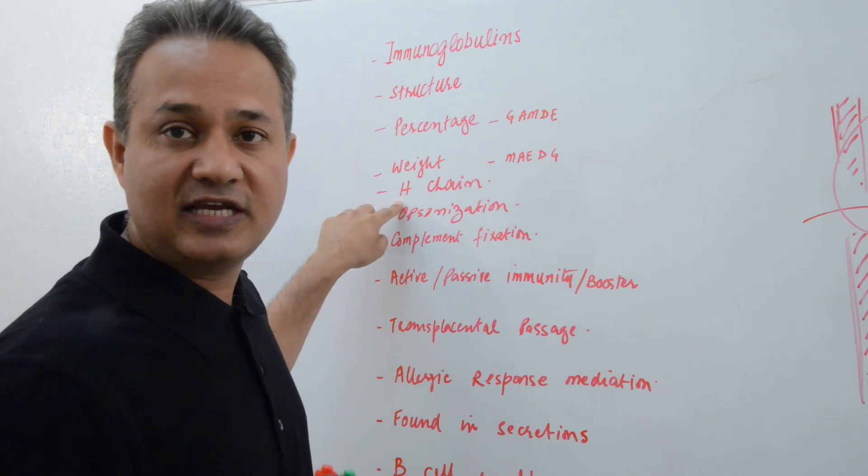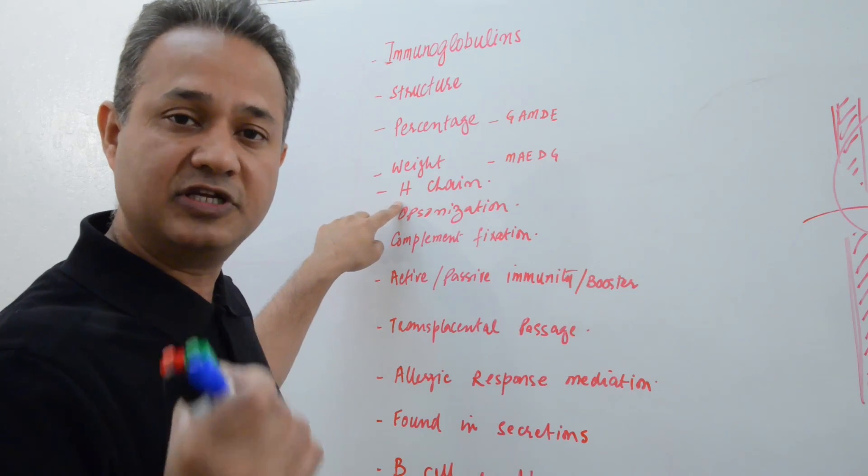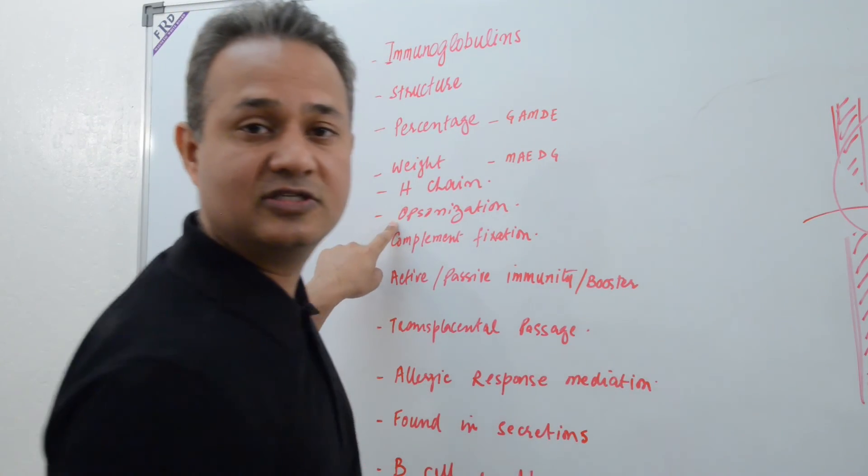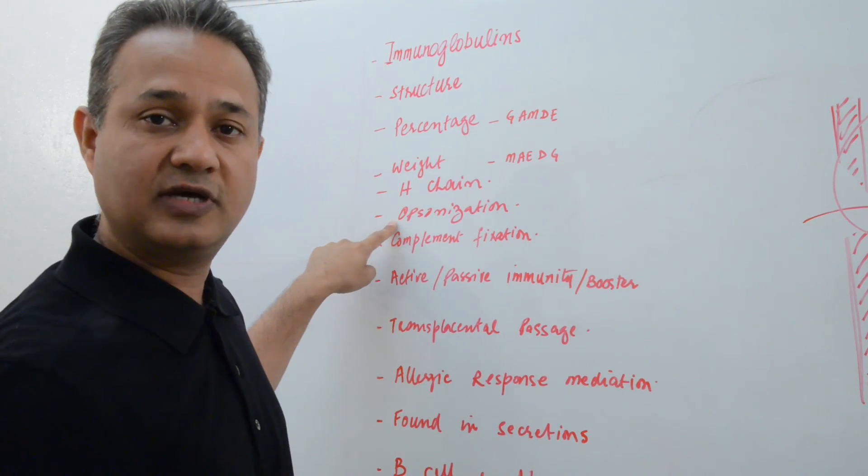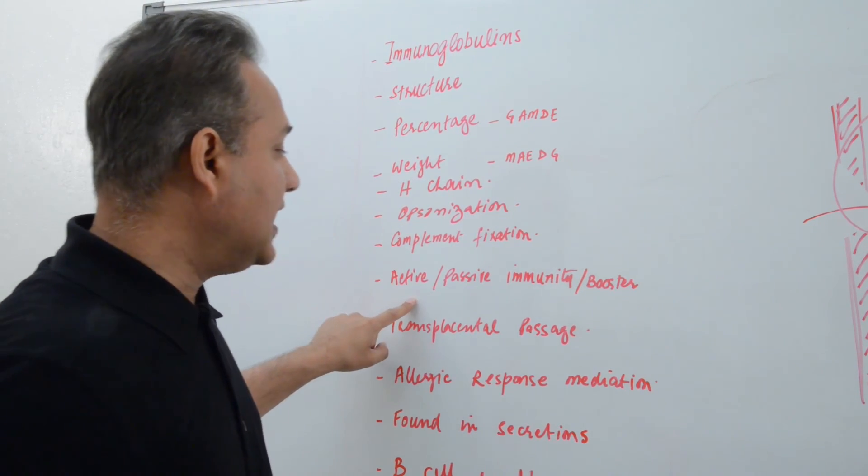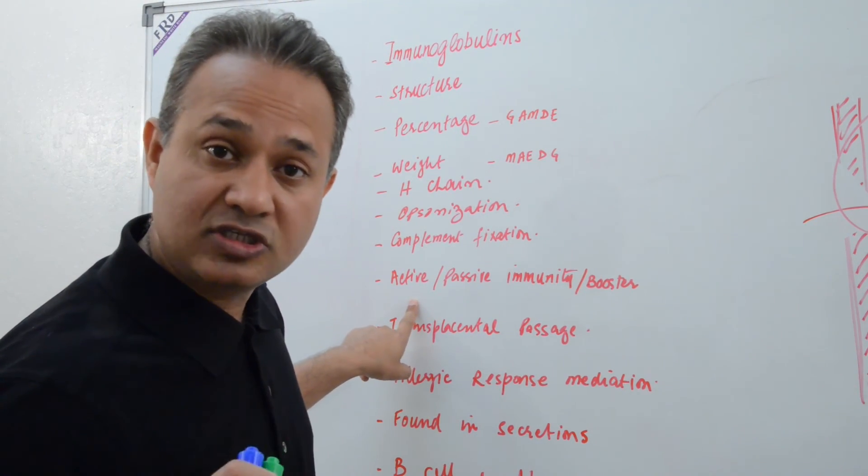We'll talk about H-chains of the immunoglobulins, what kind of H-chains immunoglobulins have. We'll talk about opsonization, just like C3B causes opsonization, immunoglobulins also help with the opsonization. Complement fixation, active-passive immunity, and booster doses.